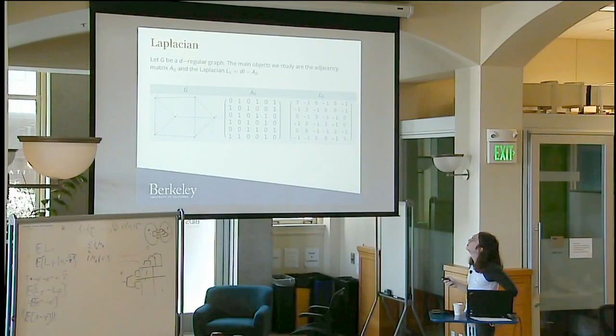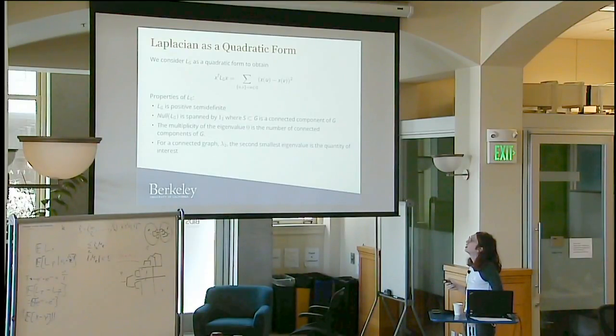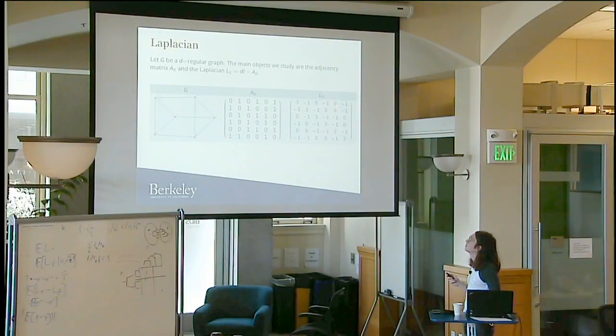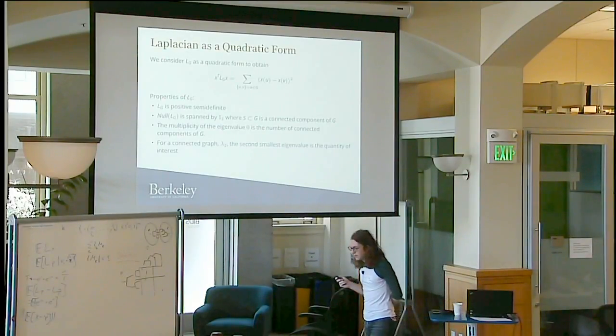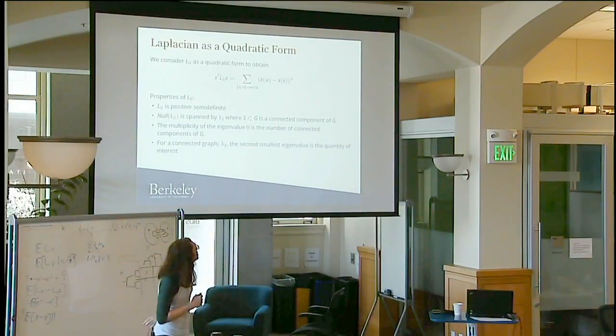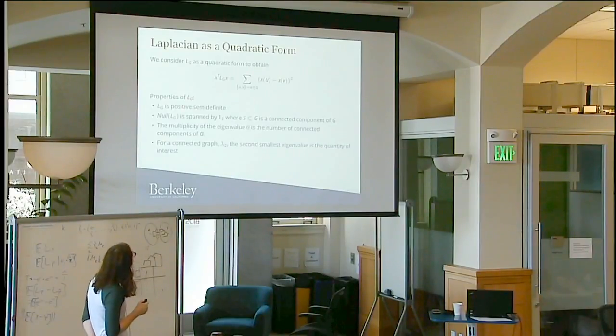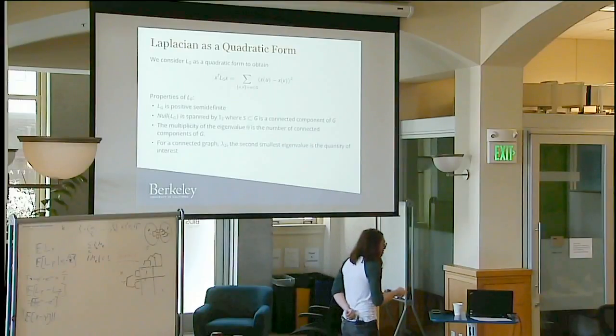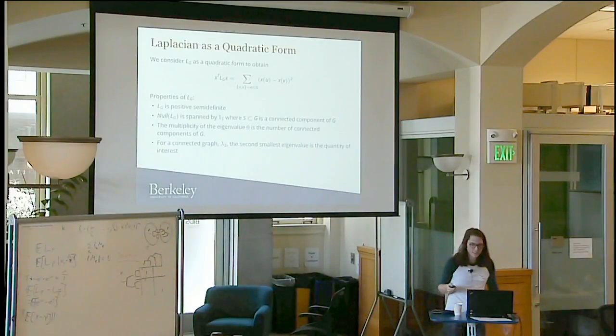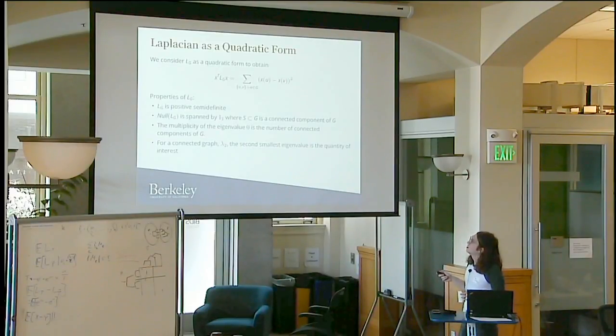So why the Laplacian? We treat the Laplacian as a quadratic form. The rows and columns correspond to vertices on my graph. I'm thinking of these vectors as being indexed by the vertices, giving a real weight to each vertex. If I think of this Laplacian as a quadratic form, I quickly get this formula. This formula tells us a lot of information immediately. The first thing it tells us is that the Laplacian is positive semi-definite. It tells us that the null space of my Laplacian is exactly spanned by indicator vectors for the connected components in my graph. The multiplicity of eigenvalue 0 is the number of connected components of G.